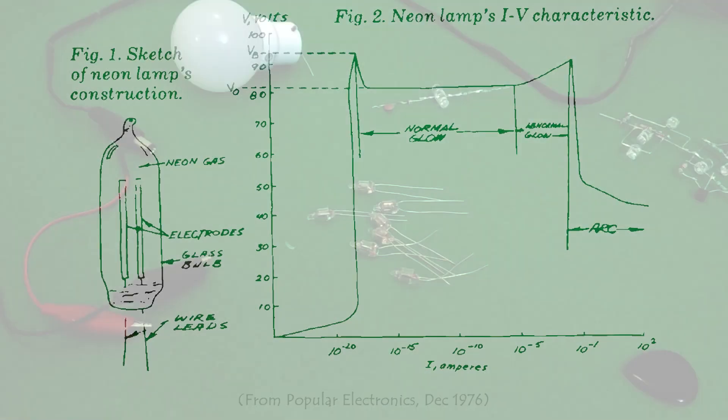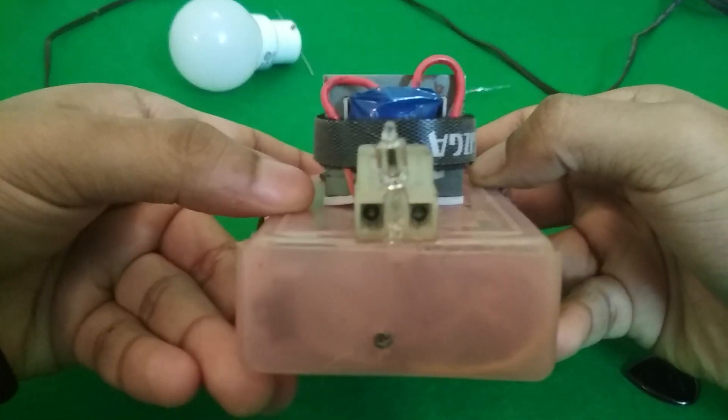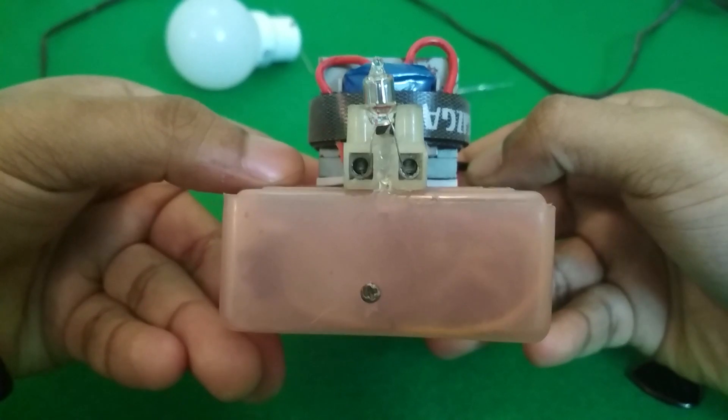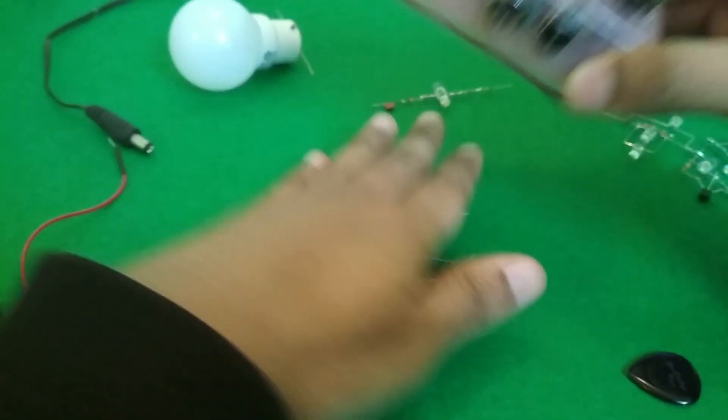I wonder what it would sound like in a distortion pedal. And so that's what this is. This is a distortion effect that uses one of these neon lamps in the front there as the main clipping element.